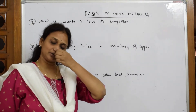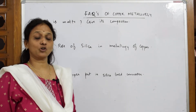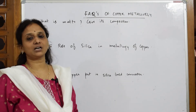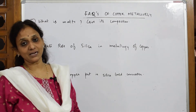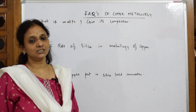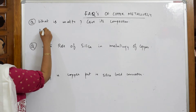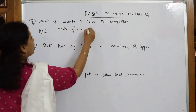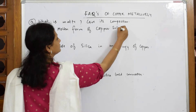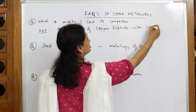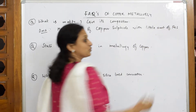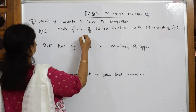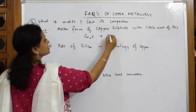What is matte and give its composition? We've already seen this. Copper matte — in the smelting process, instead of reduction with carbon and silica, we convert it into copper matte, and that copper matte is further sent to the Bessemer converter. Copper matte is the molten form of copper sulphide with a little amount of iron sulphide. Its composition: copper matte = Cu₂S + FeS.